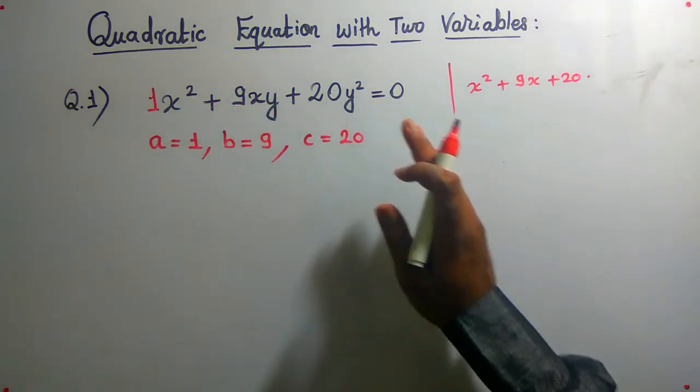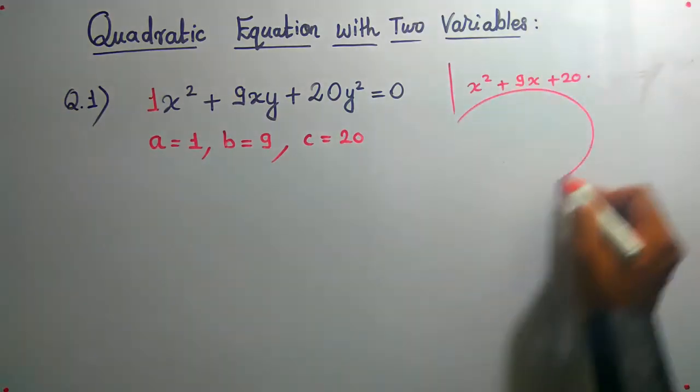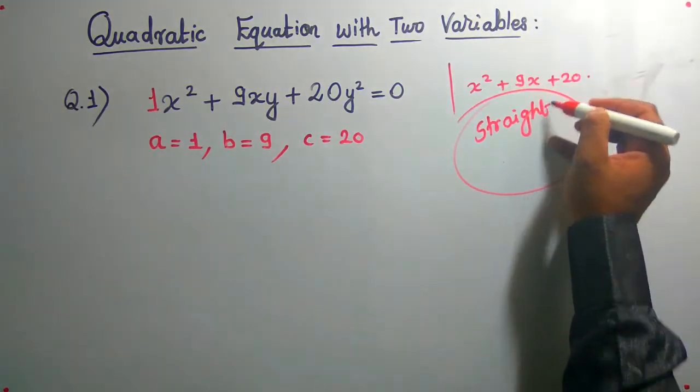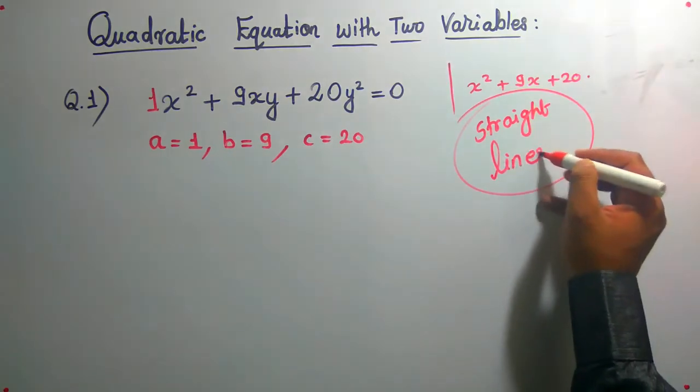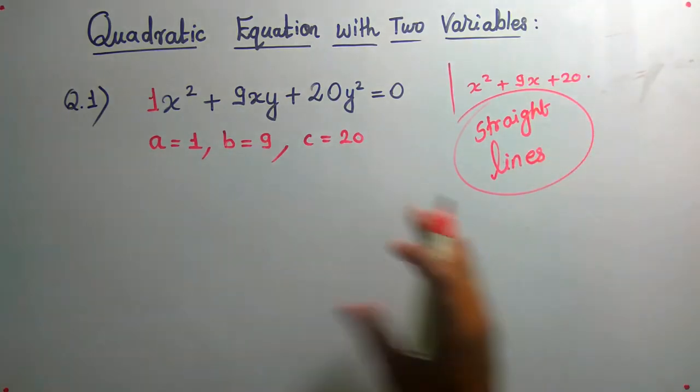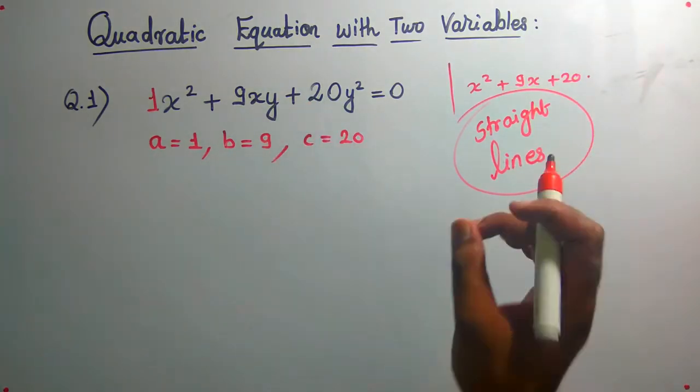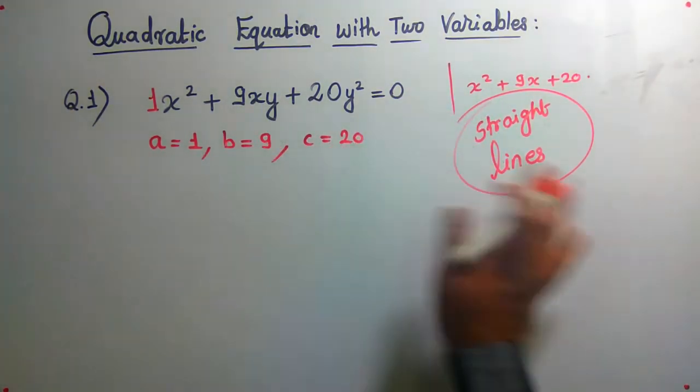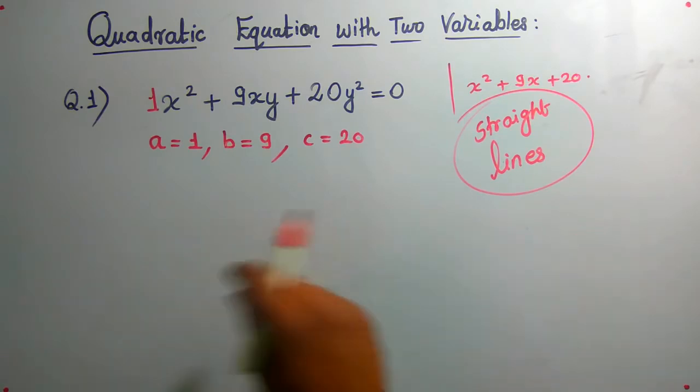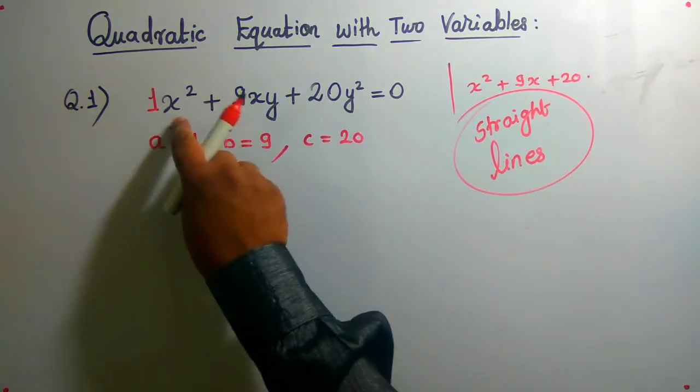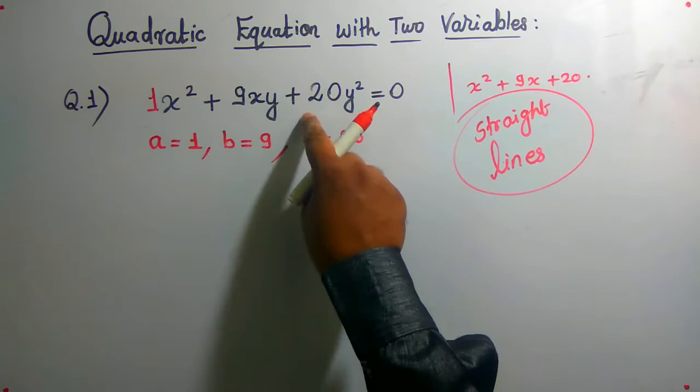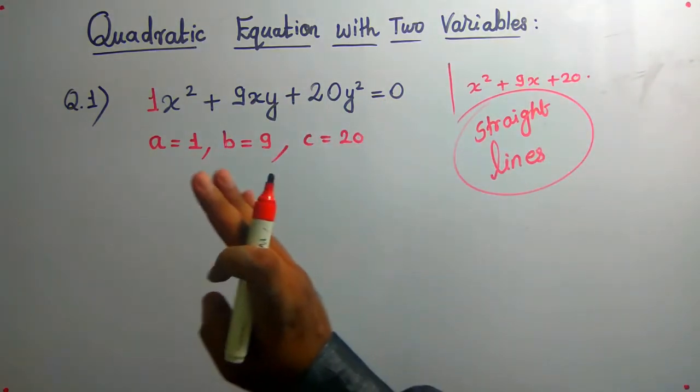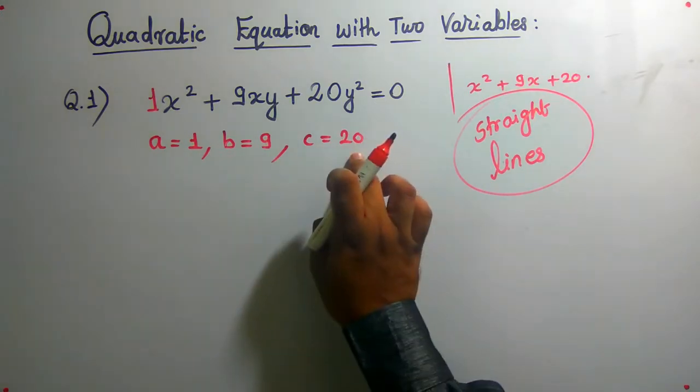This is a joint equation of two lines. You can see this concept in straight lines, a chapter in 11th as well as 12th. The solving procedure is the same. For reference we call it a, b, c, but the standard format is ax² + 2hxy + by² and so on.